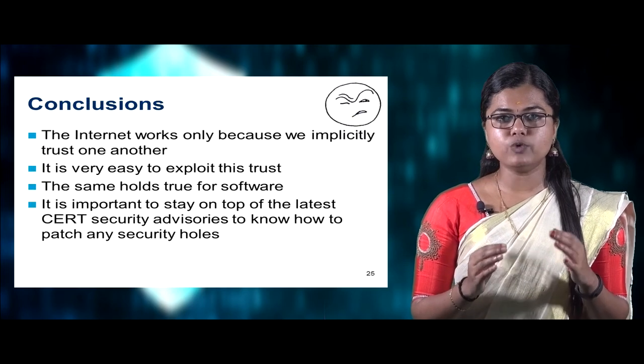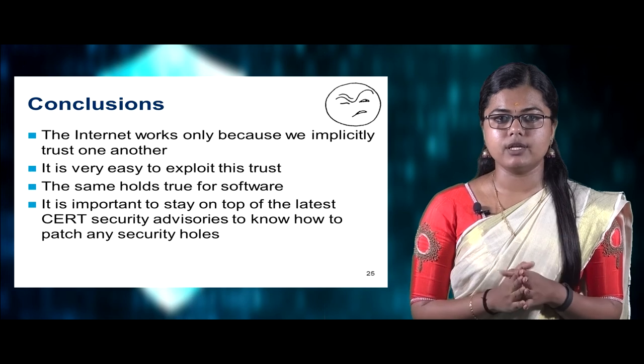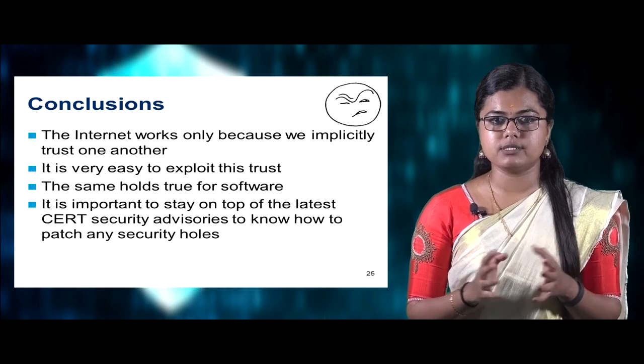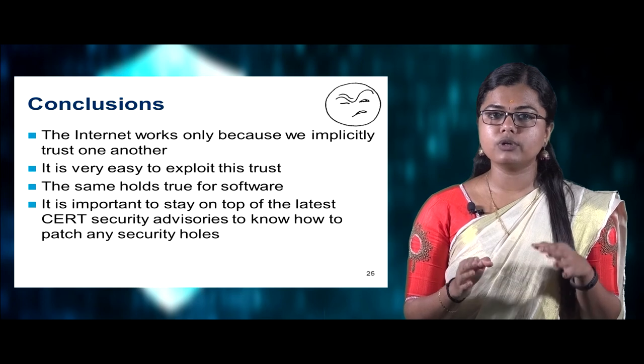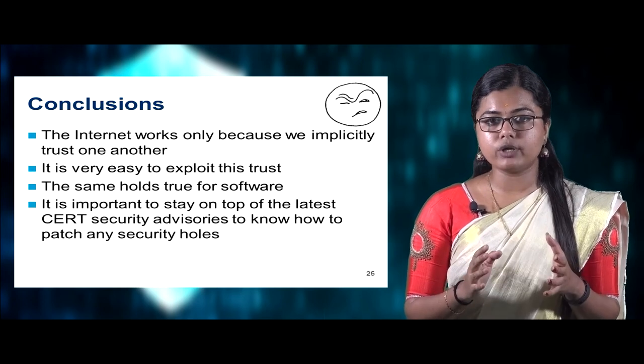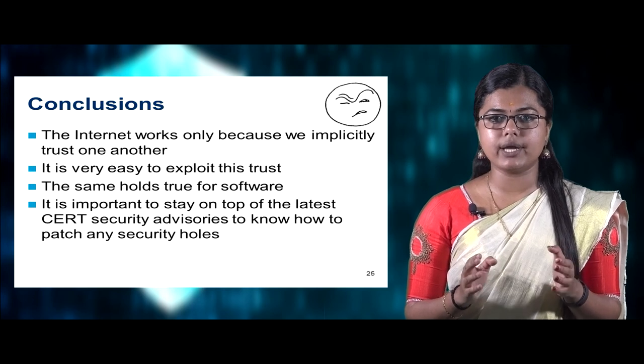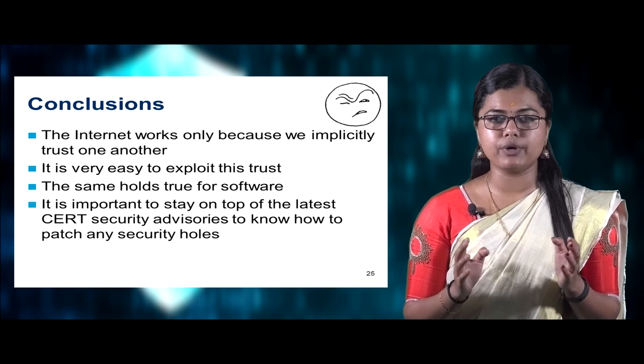In conclusion, the internet works only because we implicitly trust one another, and it is very easy to exploit that trust — the same holds true for software. It is very important to stay on top of the latest CERT advisories and know how to patch security holes. We have now covered network security, countermeasures, types of attacks, vulnerable parties, firewalls, DoS and DDoS attacks, and ingress filtering. In the next session we will discuss cryptography and network security. Thank you.